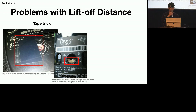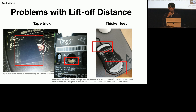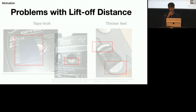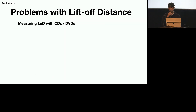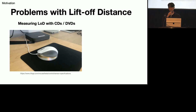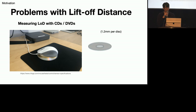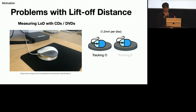Gamers prefer to keep LOD low to prevent unintentional cursor movement, and they invented several tweaks to lower it. They attach tape to reduce the amount of light from the sensor, called the tape trick. Also, they use thicker mouse feet to raise mouse height. There is also no accurate method to measure the lift-off distance setting, so many users rely on techniques established by the online community, which use CDs or DVDs, which have a thickness of 1.2 millimeters.